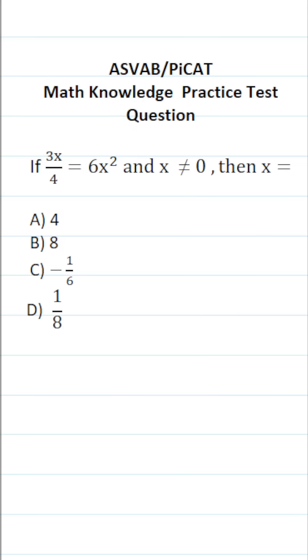This math knowledge practice test question for the ASVAB and PiCAT says if 3x over 4 equals 6x squared and x does not equal 0, then x equals. So we're going to be solving this equation for x.